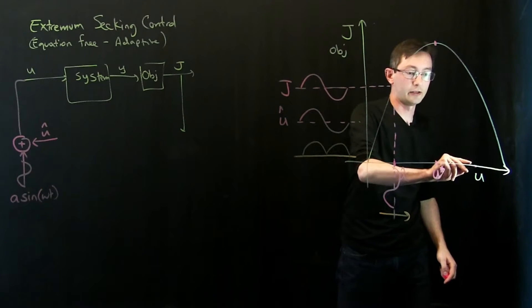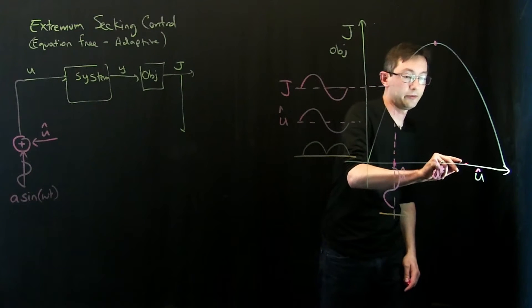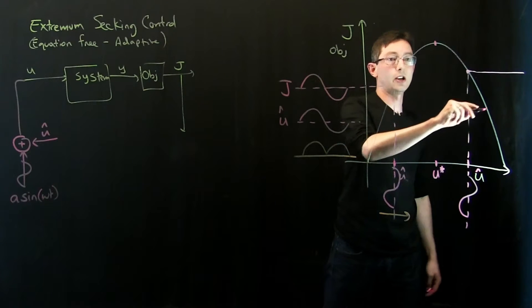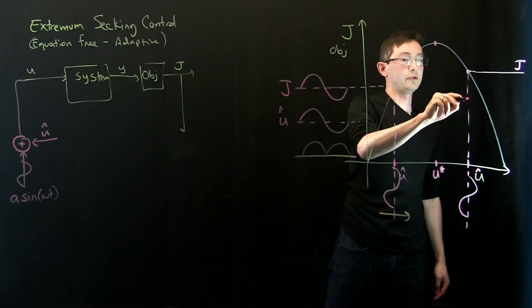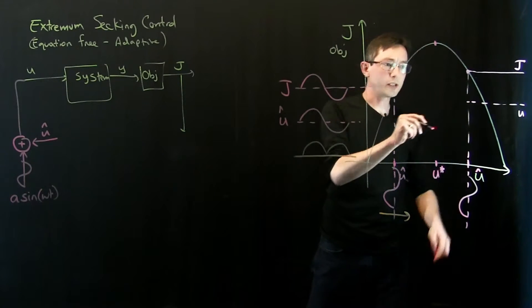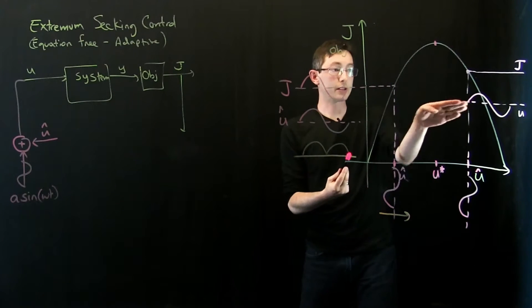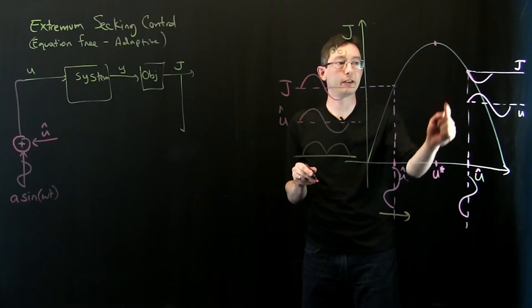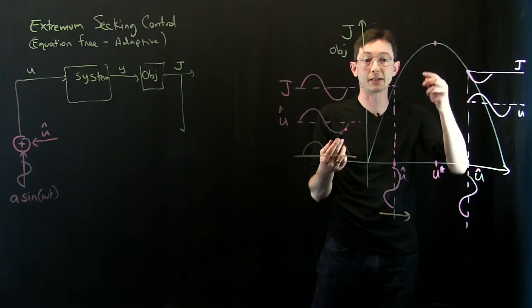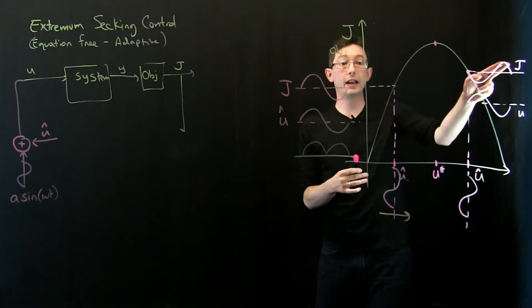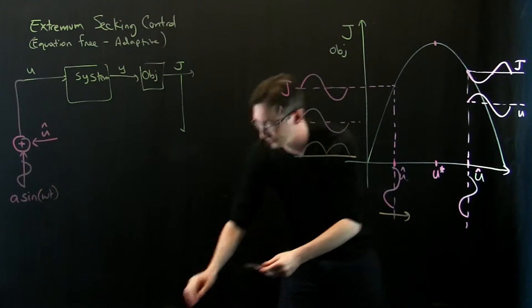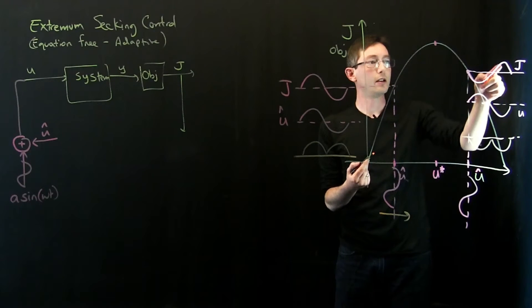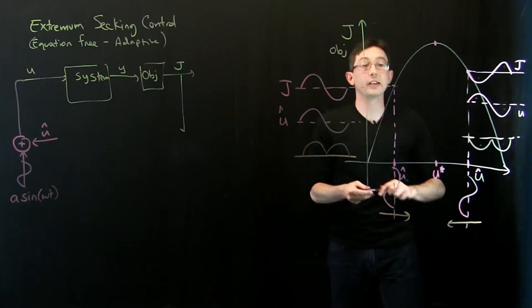Now let's say I'm to the right of my optimum. I again add a sine wave. Now if u swings to the right I measure a decrease in objective, and if I swing to the left I measure an increase. These signals are out of phase, and when I multiply them I get a signal that is mostly negative — plus times minus is minus. That mostly negative signal tells me I'm in a region with a negative slope and I need to move to the left.